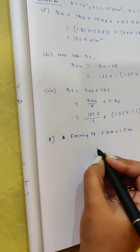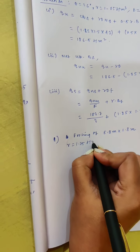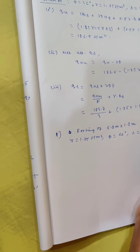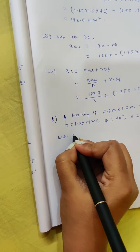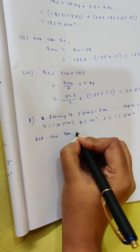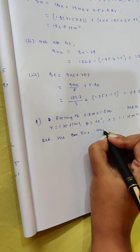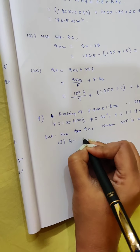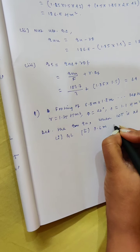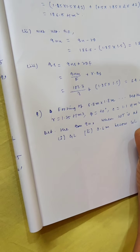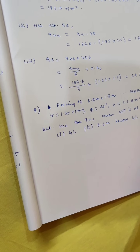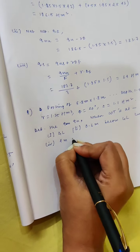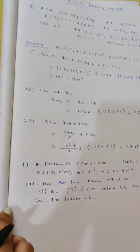The next sum: an RCC column footing of 1.8 meter × 1.8 meter size is founded at a depth of 1.5 meter below ground level. The subsoil is a loose deposit of silty sand with the following soil conditions: gamma = 1.75 ton per meter cube, phi = 20 degrees, c = 1.1 ton per meter square. Determine the ultimate bearing capacity of the footing.